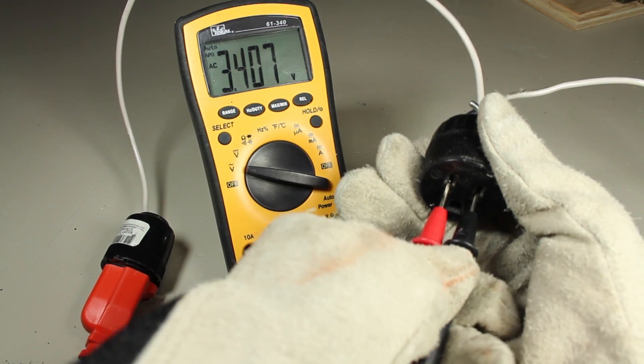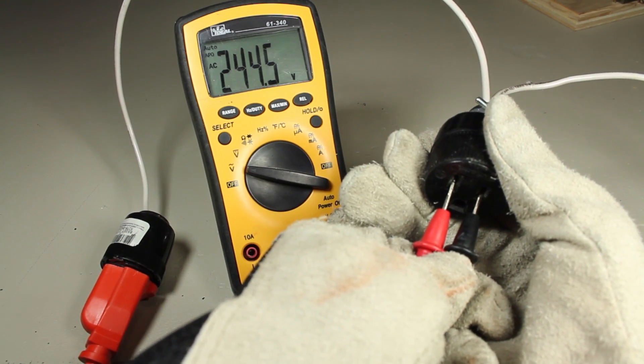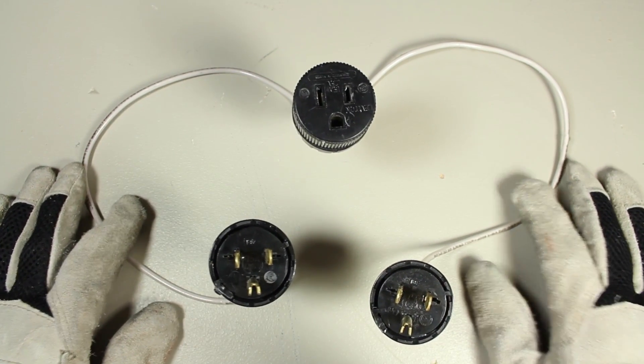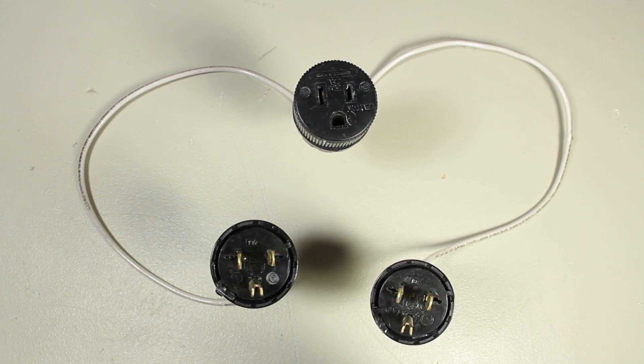Now here's the trick to powering the welder. 240 volts AC. I can't recommend this as the safest way to do it, but here's how I did it with a couple of plugs, a connector, and some 10 gauge wire.